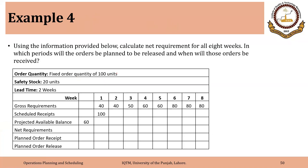The order quantity is a fixed order quantity of 100 units, safety stock of 20 units, and lead time is two weeks. In week zero, that is before the planning horizon, we are having an inventory of 60 units. The gross requirements are 40 and we are also having a scheduled receipt of 100 in week one.